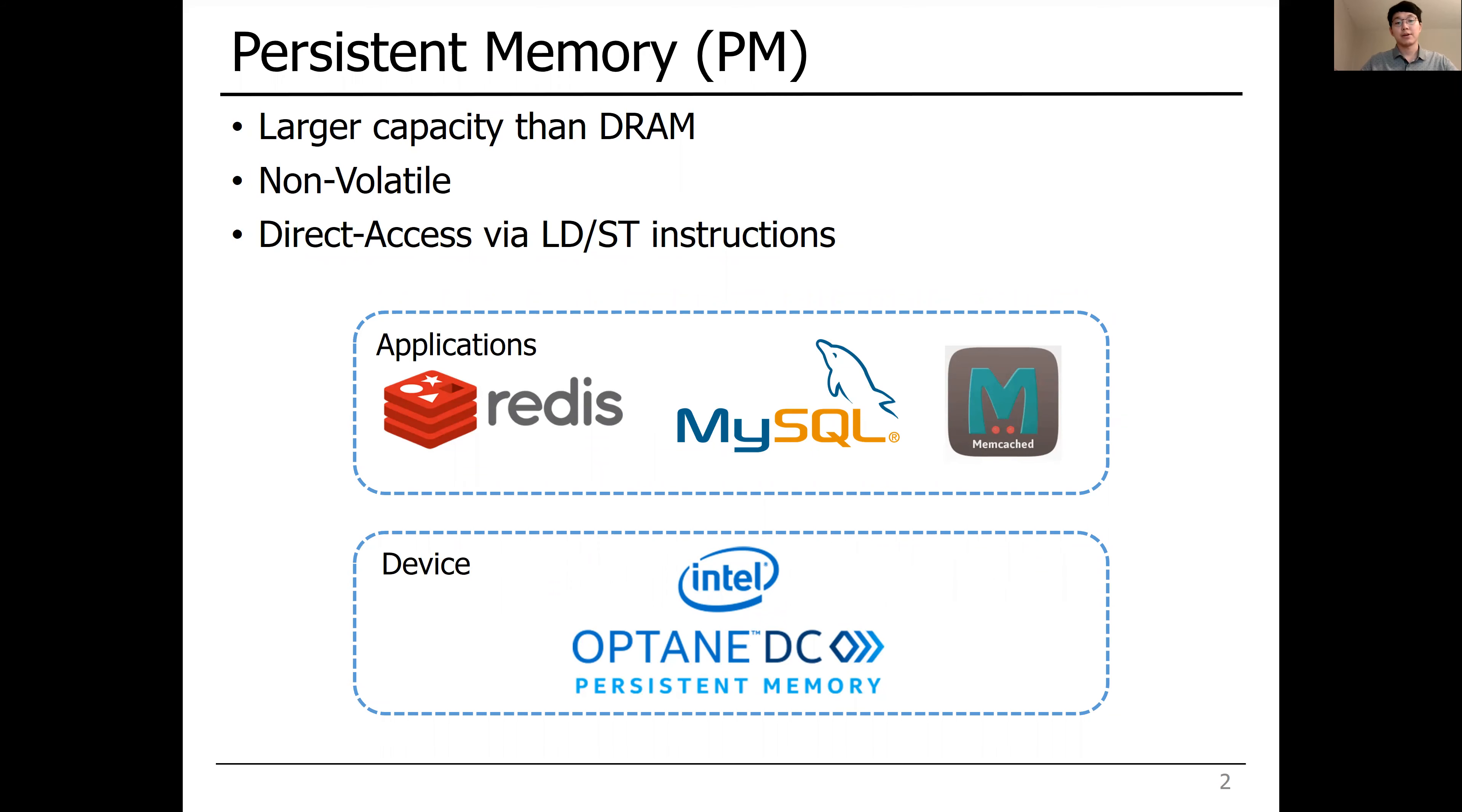Persistent memory has large capacity compared to DRAM while retaining data across power on and off. At the same time, it leverages byte addressability through load store instructions.